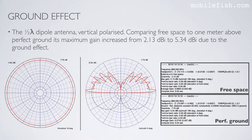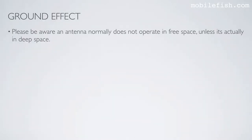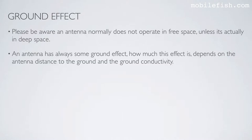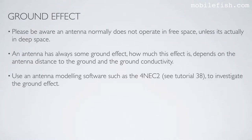Here you can see two radiation patterns: one when the antenna is in free space, and the other when the antenna is 1 meter above perfect ground. The maximum gain increases from 2.13 dBi to 5.34 dBi due to the ground effect. Please be aware, an antenna normally does not operate in free space unless it is actually in deep space — an antenna always has some ground effect. How much this effect is depends on the antenna distance to the ground and the ground conductivity. Use antenna modeling software such as 4NEC2, see tutorial 38, to investigate the ground effect.